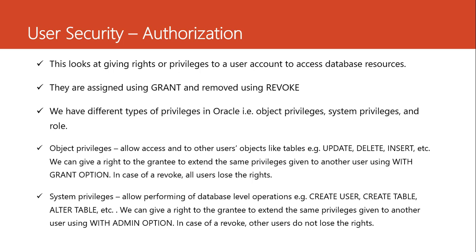Let's use the same example of Abraham and HR. Abraham doesn't have any object, but HR has. We can decide to give Abraham a right to access the objects belonging to HR. But again, we can give Abraham a right to also give the same right to other people to access objects belonging to HR. How do we do that? We use what we call the WITH GRANT OPTION keyword when we are granting these privileges. Let's see this in action.